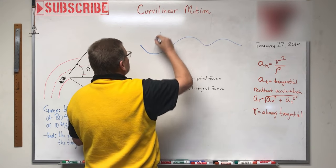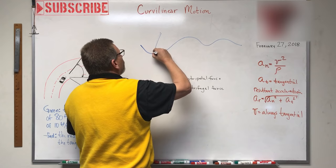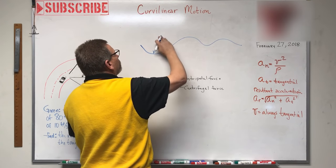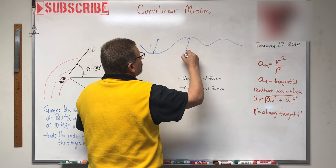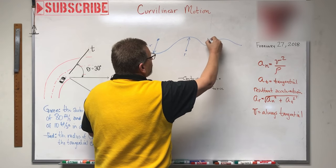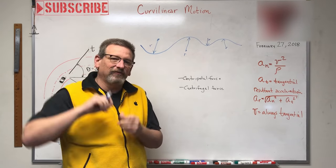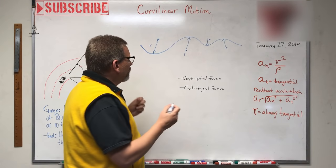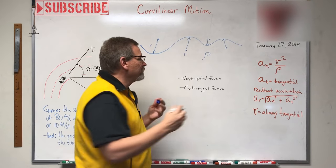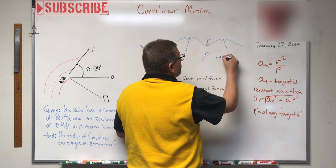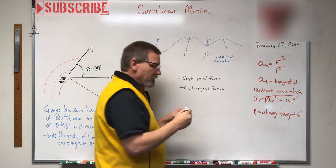At any point on the curve, we can define some radius. There may be a different radius at different points — a smaller radius here, a larger one there. Everywhere on that curve, at any one point, we can define a radius that the particle is moving around. We call that rho — the Greek letter ρ — and that is the radius of curvature at that point.